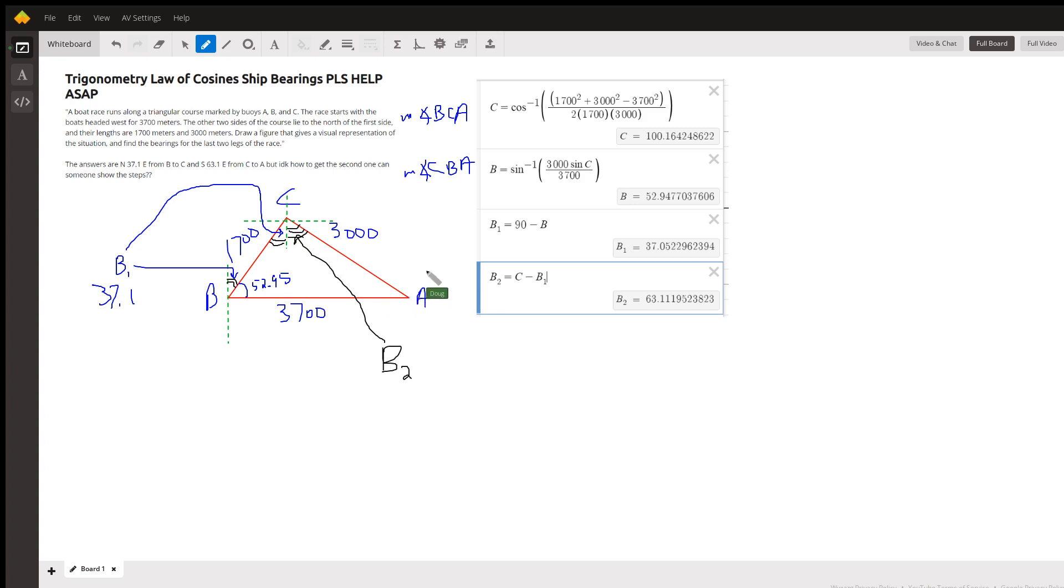I assume you used the law of cosines to find the measure of angle C, which is about 100 degrees. Then once you have angle C, you can use the law of sines to find angle B.